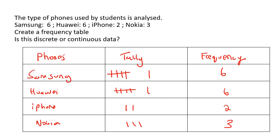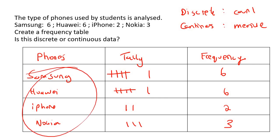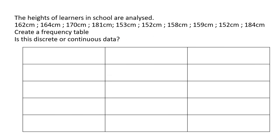Did you measure what phone your friends have? Did you put it on a scale to measure its weight to identify the phone? No — you would just look at the phone and easily see it's a Samsung, then count the different Samsungs in the classroom. Remember: with discrete you count, with continuous you measure. So this is definitely something we're counting — discrete data.